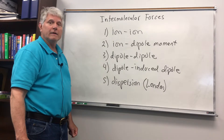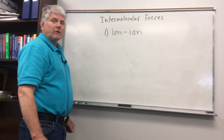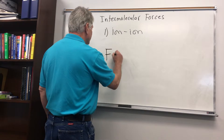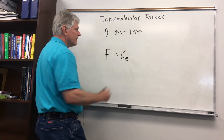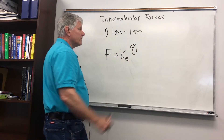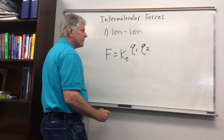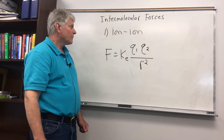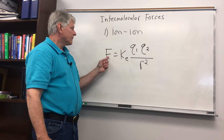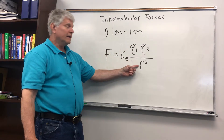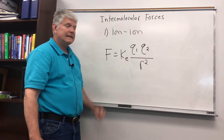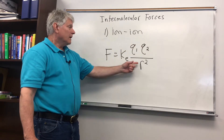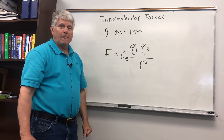Let's first look at ion-ion forces. If we look at the Coulombic force — the attraction or repulsion between charged particles — this equals Coulomb's constant times the charge on particle one times the charge on particle two, divided by the square of the distance between the two charges. As the charge increases, the force increases, but as the distance increases, you're dividing by a larger number and the force decreases. So the closer they are together and the greater the charge, the stronger the force.